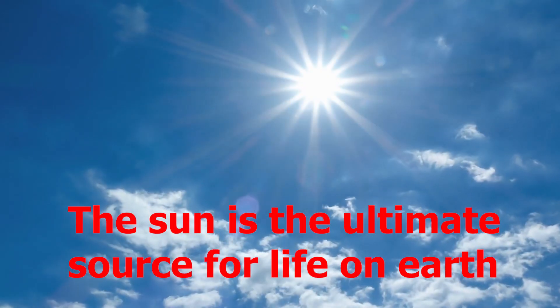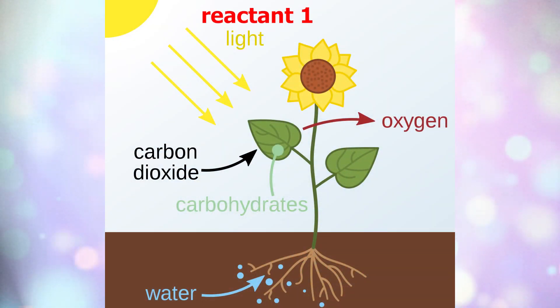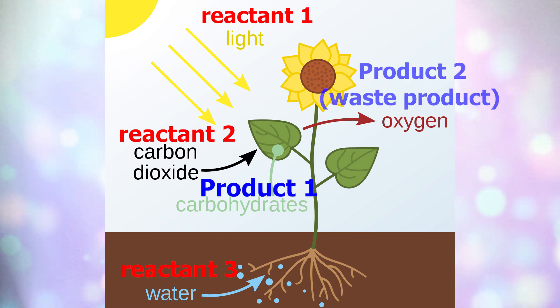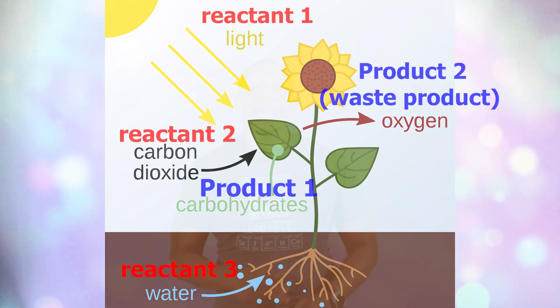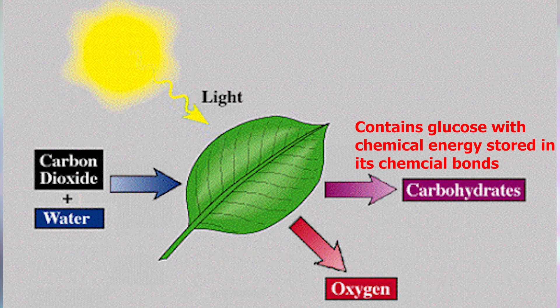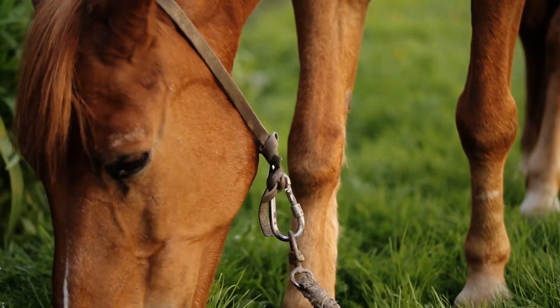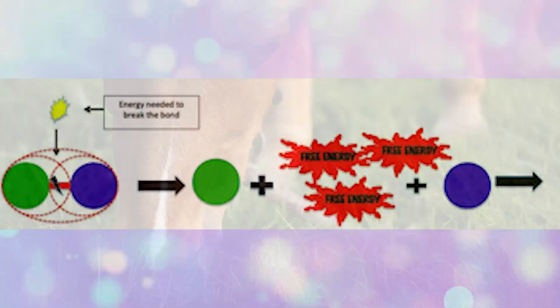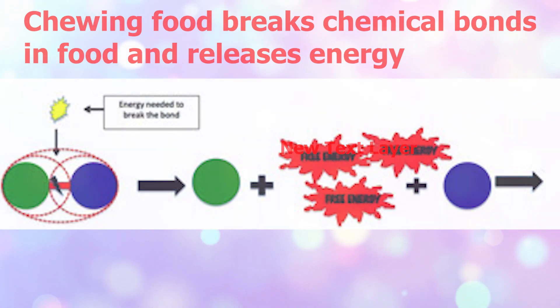Let's start off with a brief introduction of chemical energy. As we all know, the sun is the ultimate source of life on Earth. Plants and trees take in sunlight, carbon dioxide, and water to produce glucose and oxygen. The oxygen produced is just a waste product to the plant and is used by us during cellular respiration, but we'll cover that a little later. The glucose produced by the plant is a carbohydrate, which has chemical energy stored in its chemical bonds. Living things get their energy by eating plants and trees. When they eat plants and trees, the chemical bonds of the carbohydrates are broken, which releases the chemical energy for the organisms to use.